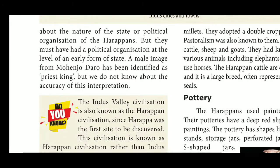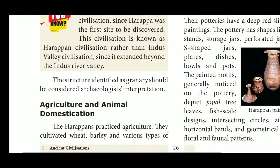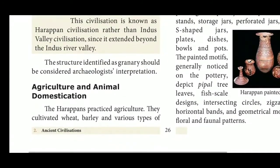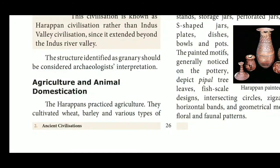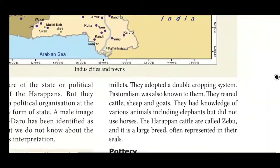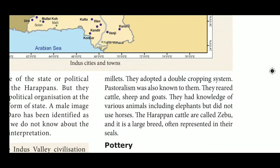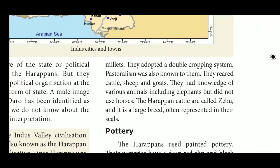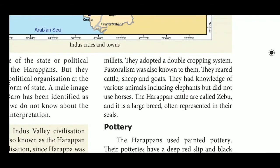The Harappans practiced agriculture. They cultivated wheat, barley, and various types of millets as their main food. They adopted a double cropping system, which we also use today. Pastoralization was also practiced — some members of society were shepherds who reared cattle, sheep, and goats. They had knowledge of various animals including the elephant but did not use the horse.